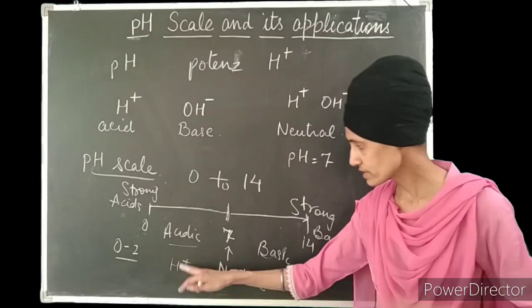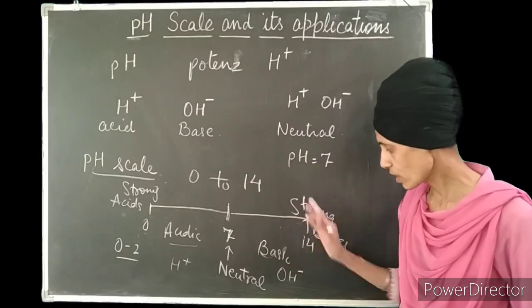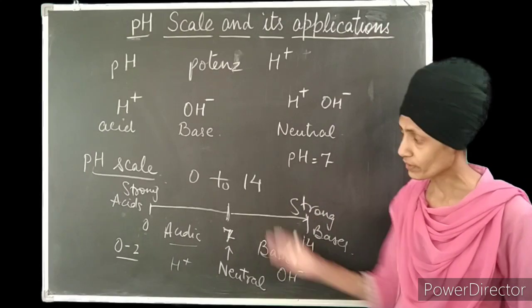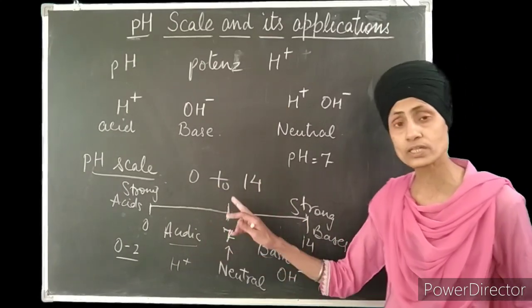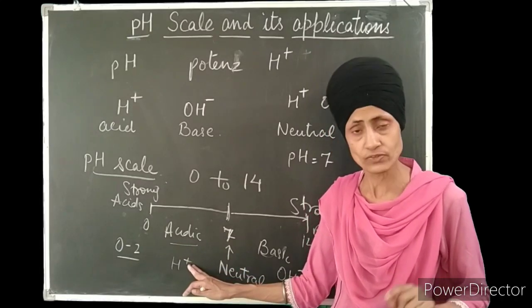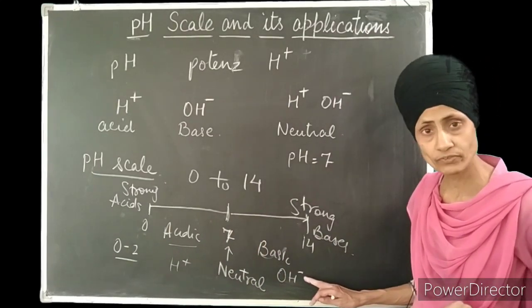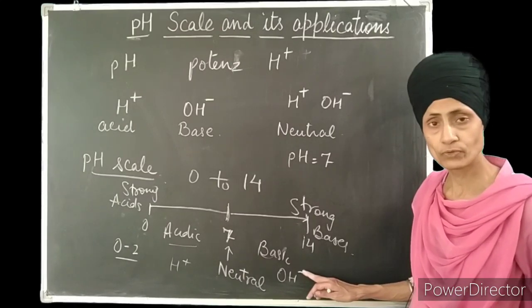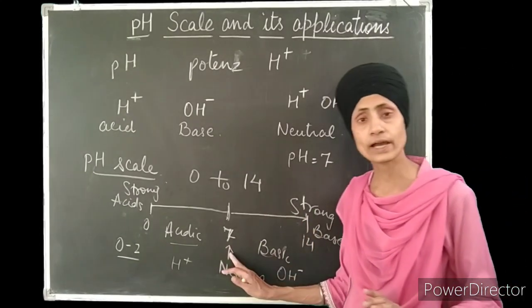Acids along with the H+ ions also possess OH- ions. And basic solutions or bases along with the OH- ions also possess H+ ions. Acids are acidic because the number of the H+ ions is more than the number of OH- ions. Similarly, bases show basic character because the number of OH- ions is more as compared to H+ ions. And neutral solutions have both ions in equal amount.